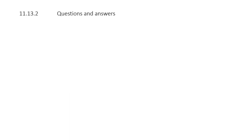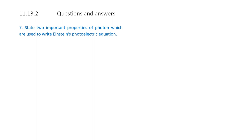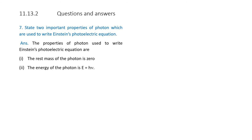Question 7: What are the two important properties of a photon used to write Einstein's photoelectric equation? Answer: First, the rest mass of a photon is zero. Second, the energy of a photon is given by E = hν, where E is the energy, h is Planck's constant, and ν is the frequency.